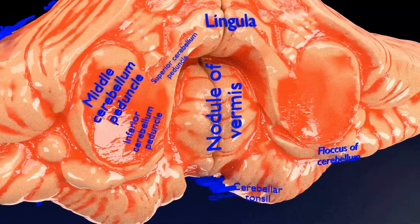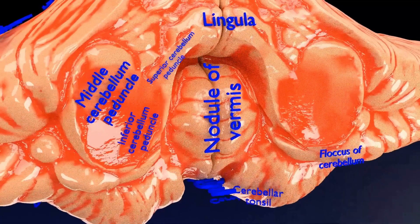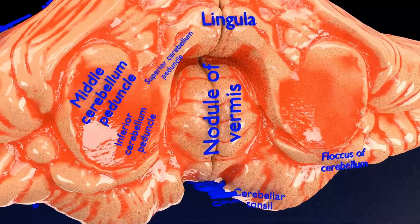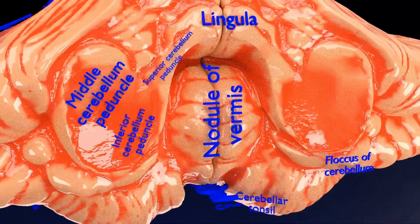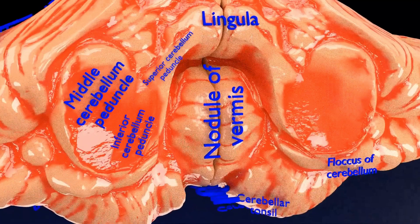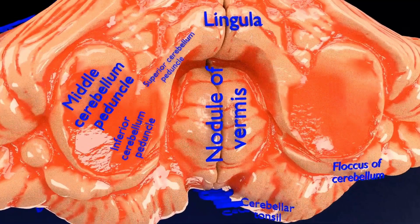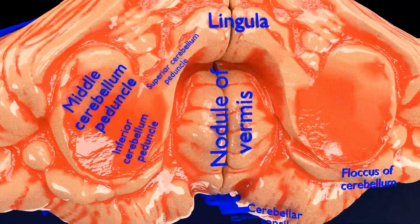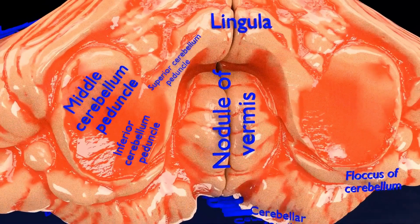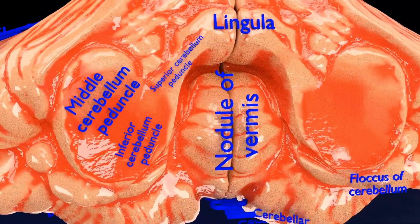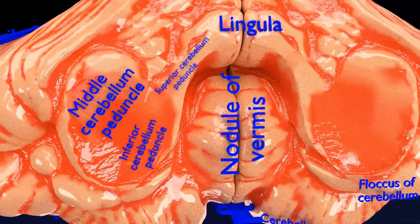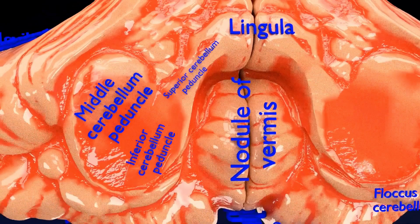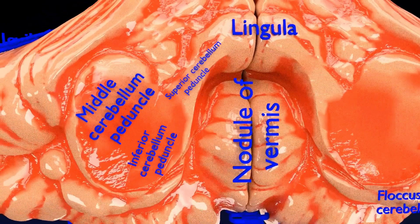The middle cerebellar peduncle, the largest of the three peduncles, receives input from the pons, mainly from the pontine nuclei, whose input is from the cerebral cortex. The inferior cerebellar peduncle receives input from the vestibular nuclei, spinal cord, and the tegmentum.